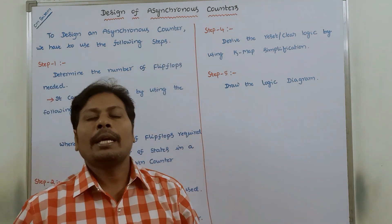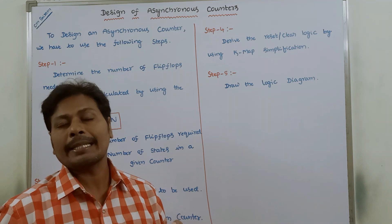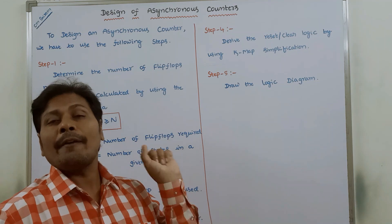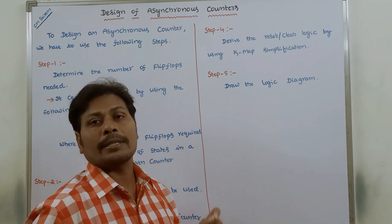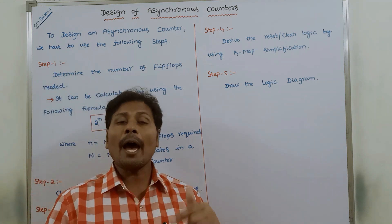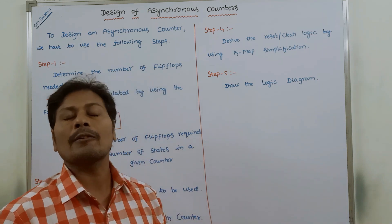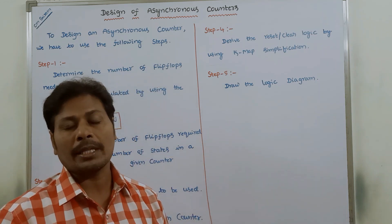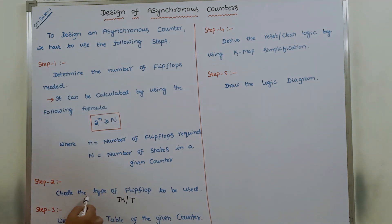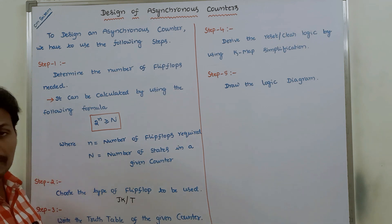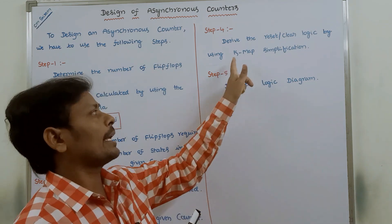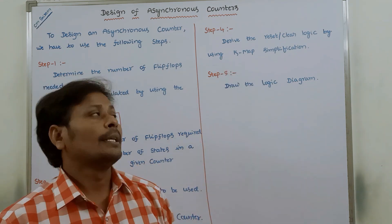Step 4: here we have to use a reset logic or clear logic. Derive the reset or clear logic by using Karnaugh map simplification. We have to find out the reset logic or clear logic from the truth table of the given counter from Step 3, and that can be simplified using a Karnaugh map.